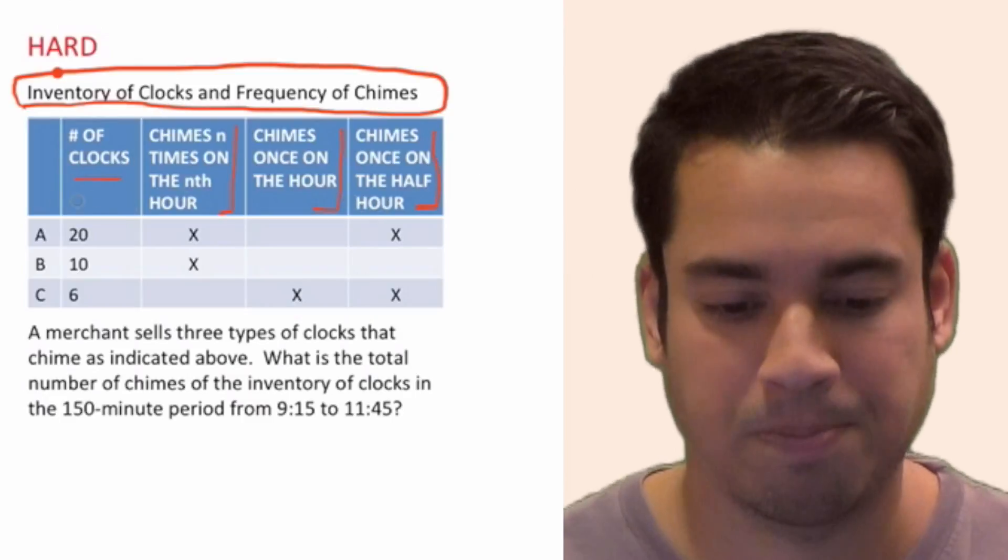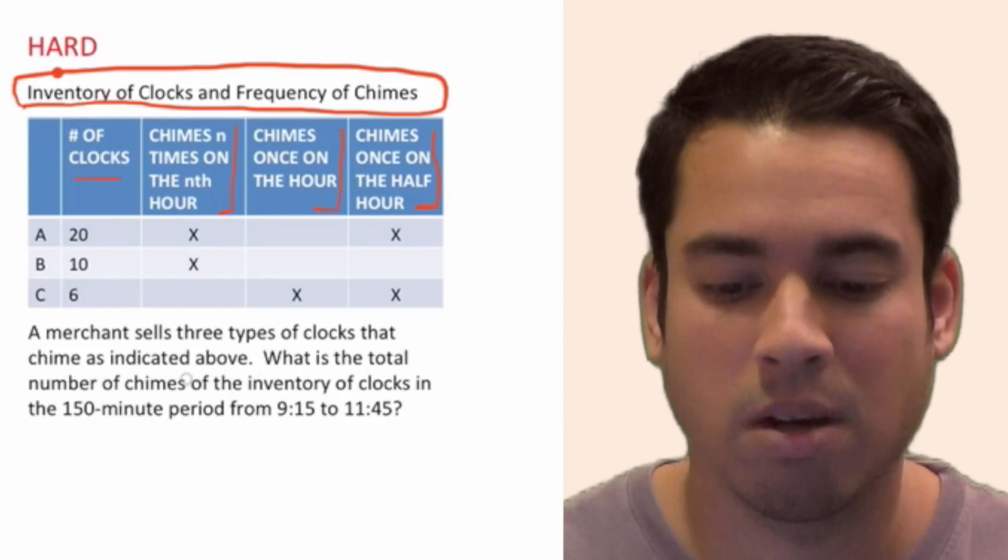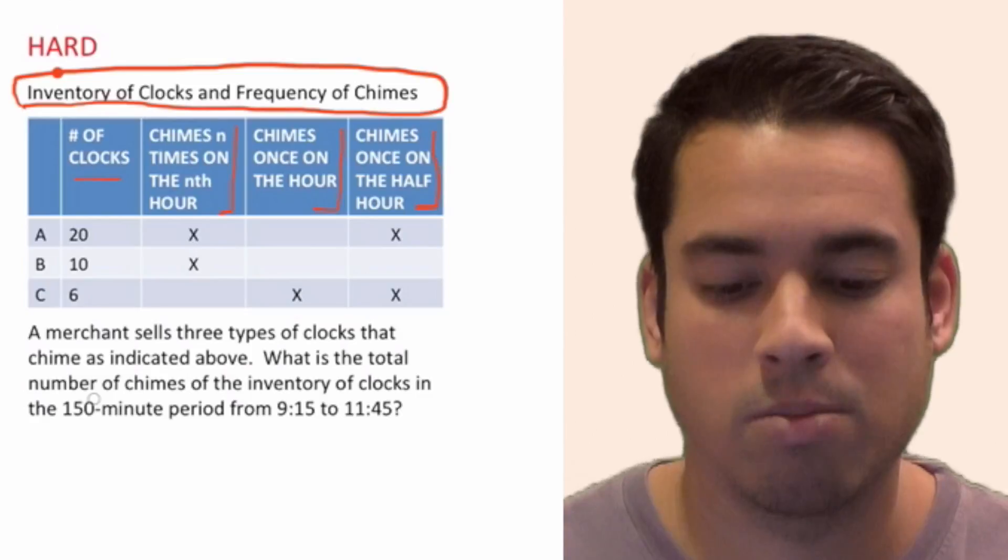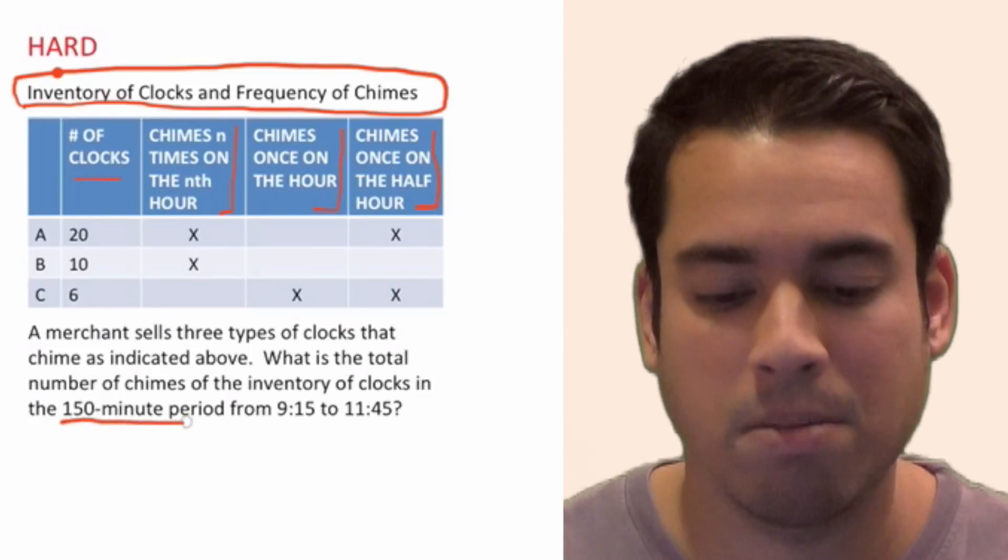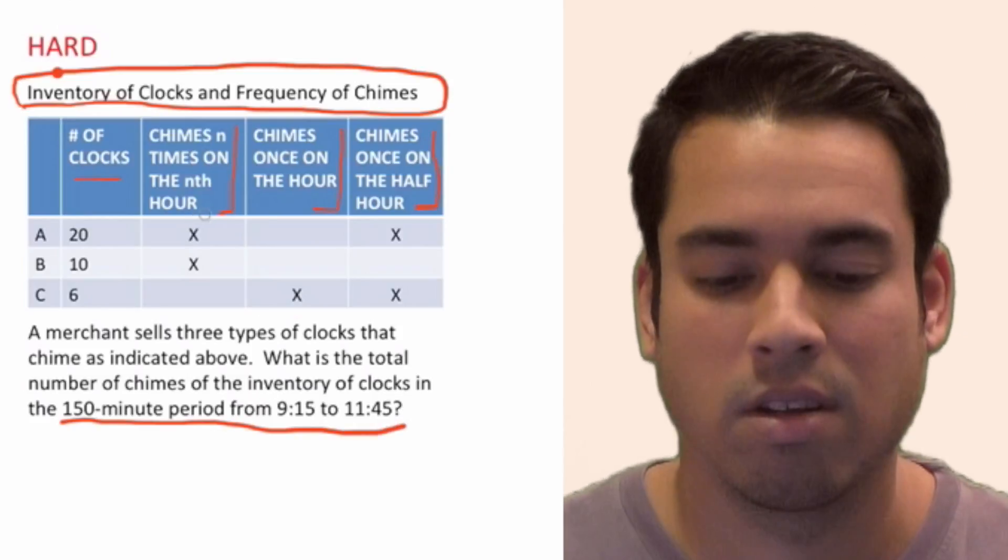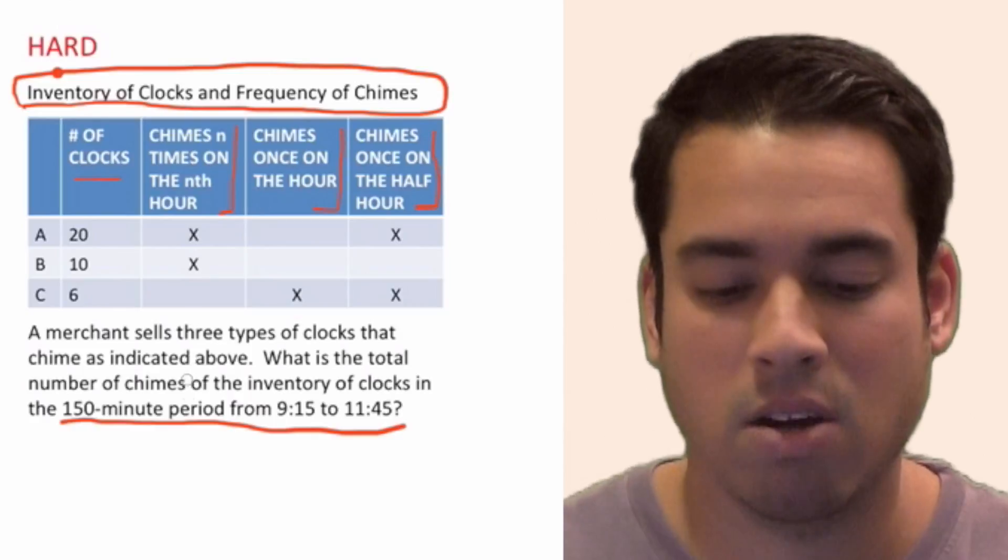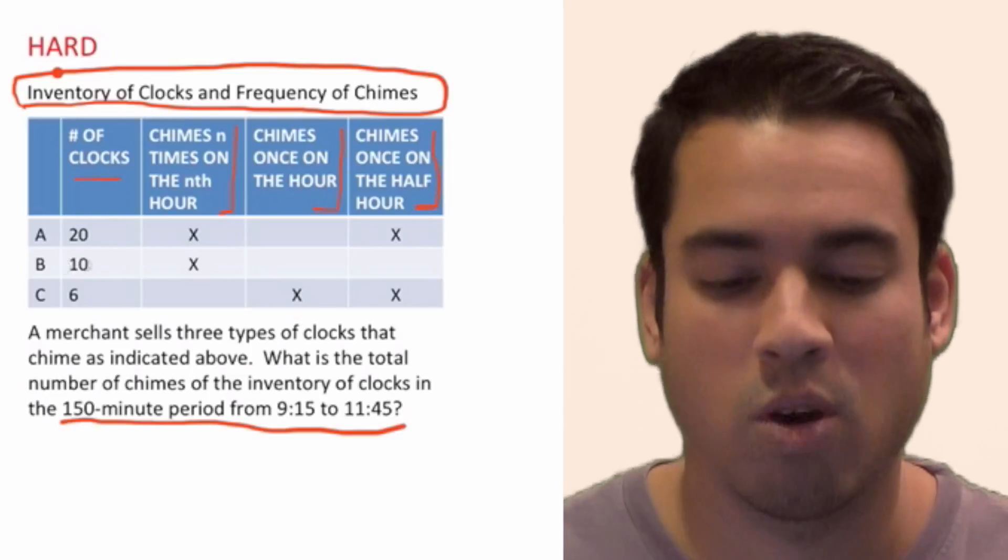Now let's read the question. A merchant sells three types of clocks that chime as indicated above. What is the total number of chimes of the inventory of clocks in the 150-minute period from 9:15 to 11:45? So now we got to think about this time frame, and we got to apply it to all these clocks. We're just going to do it one by one.